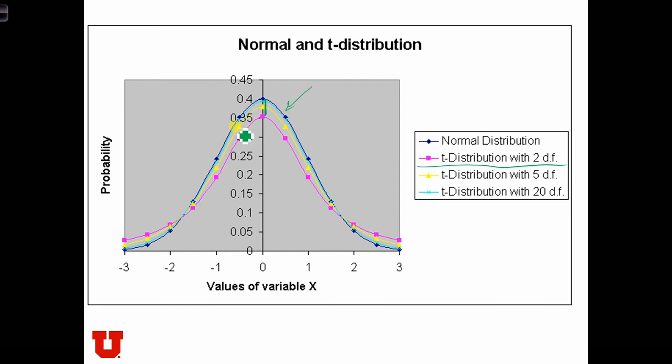And instead of the weight of the distribution being up here in the center of the distribution, more of the weight is out here in the tails. Which means that with t-distributions, we assign higher probabilities into these more extreme ranges, into the tails, than we would with the normal distribution.